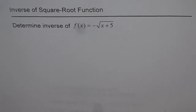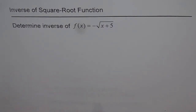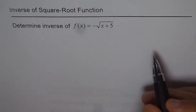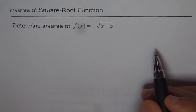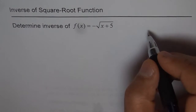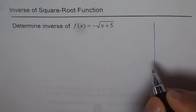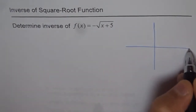Inverse of a square root function. Determine the inverse of f(x) = -√(x + 5). This is a very interesting question — I'd like you to solve it and then look at my solution. When doing these kinds of problems, my suggestion is to try to sketch the function first so that you get a fairly good idea of what to expect as your answer.